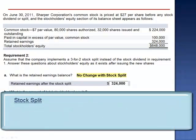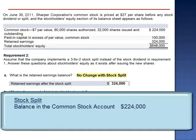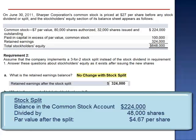Another effect of a stock split is to split the par value. Since the balance in the common stock account has not changed — it remains at $224,000 — but we now have 48,000 shares issued and outstanding, the par value needs to decrease. To calculate the new par value, take the $224,000 balance in the common stock account divided by the 48,000 shares outstanding after the stock split. The par value of the common stock after the split is $4.67 per share.